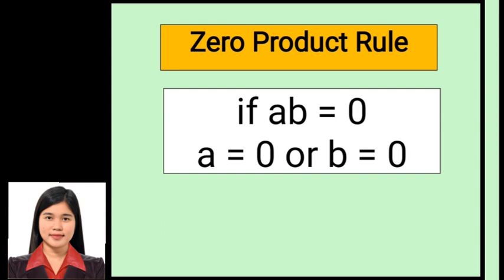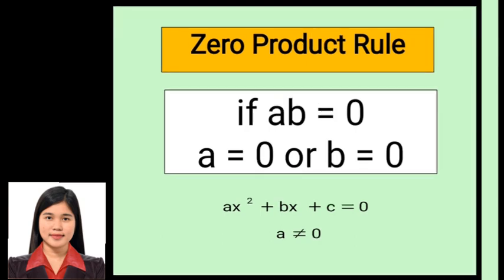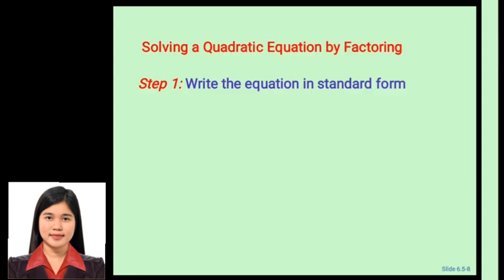To apply this rule to solving a quadratic equation, we first must ensure the equation is in the standard form ax² plus bx plus c equals 0, where a does not equal 0. Then determine whether the expression on the left side can be factored. If so, the product of those factors is 0, meaning either factor 1 equals 0 or factor 2 equals 0.